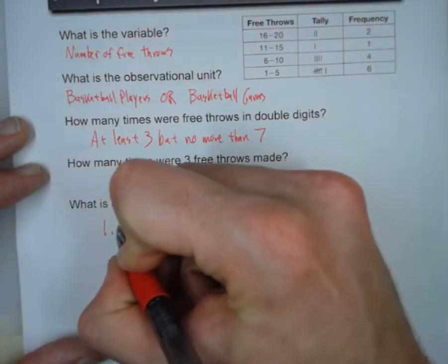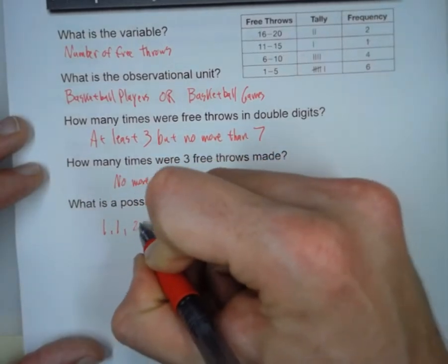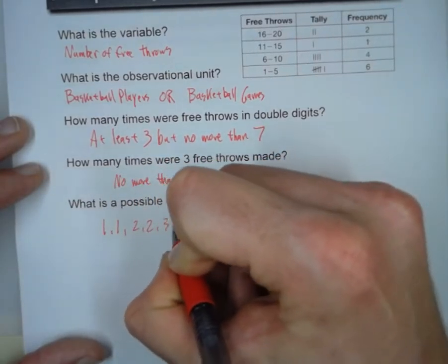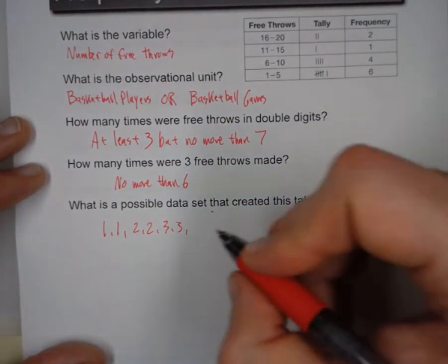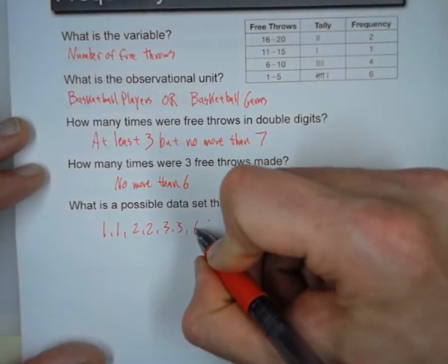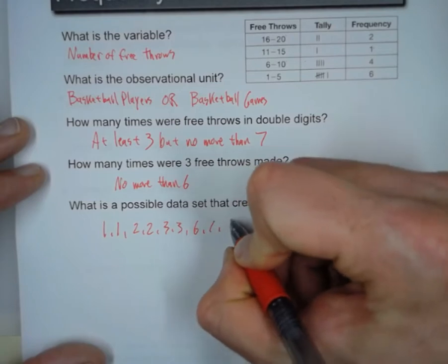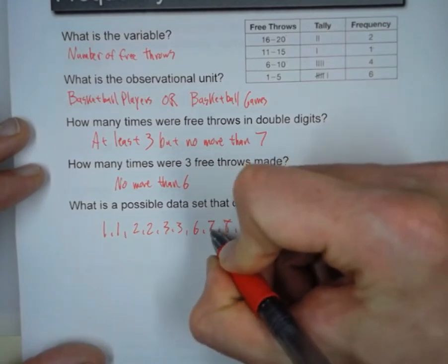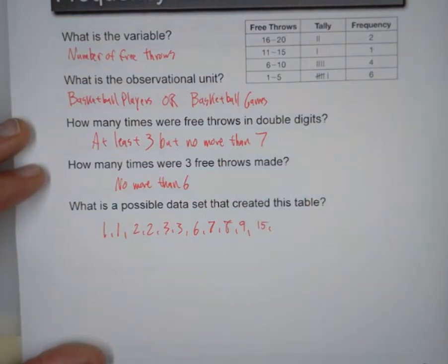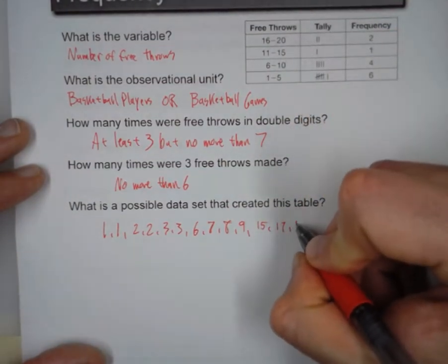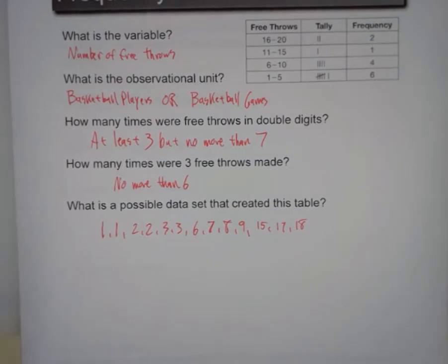So for example, I could say 1, 1, 2, 2, 3, 3. There's my 6. But you may choose differently. Then the next 6 through 10: 6, 7, 8, 9, like that. Next one, 11 to 15, this could be 15. And then 16 to 20, it could be 17 and 18. That's a possibility.